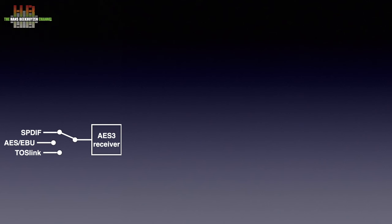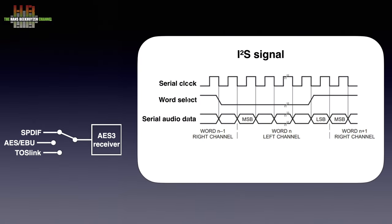Most DACs have more than one input. Let's start with the AES-3 group of digital inputs: S/PDIF, AES-EBU, and the optical TOSlink. These have an identical data structure and have the clock signal embedded. Via a switch, the selected input is sent to the AES-3 receiver — usually a custom chip that translates the AES-3 input signal into I2S: a serial clock signal, serial audio data containing the left and right signal sequentially, and a word select signal indicating the channel. This group of signals is standardised and called inter-IC sound, abbreviated to I2S.